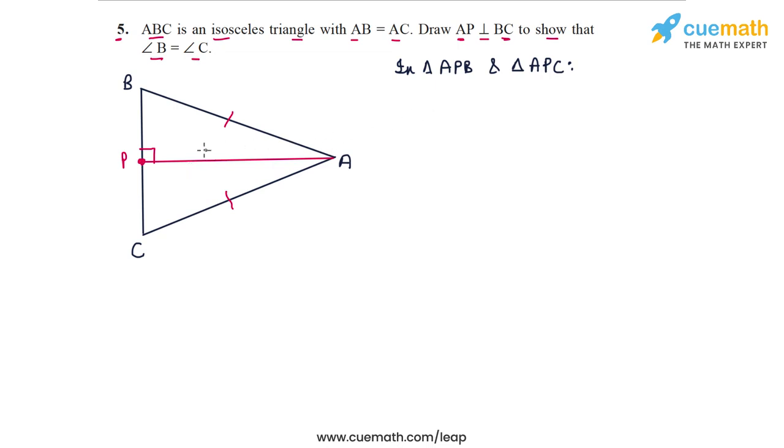We have side AP common to both triangles, so AP equals AP. Also, we are given that side AB is equal to side AC, so AB equals AC.